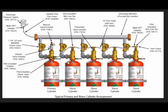Now I will start explaining in Urdu. This is a typical cylinder arrangement for a firefighting system — FM200 fire suppression system. The first cylinder is the primary cylinder and the remaining cylinders are slave cylinders.